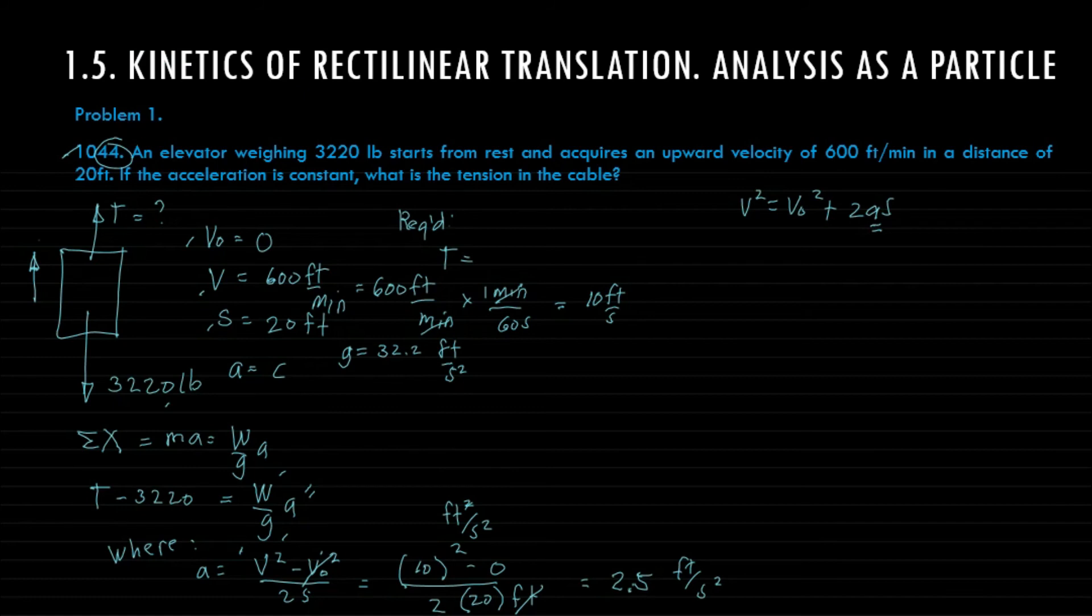Therefore we can now solve for the tension. From this equation we can solve the tension. T equals 3220 pounds plus 3220 over 32.2 times 2.5.